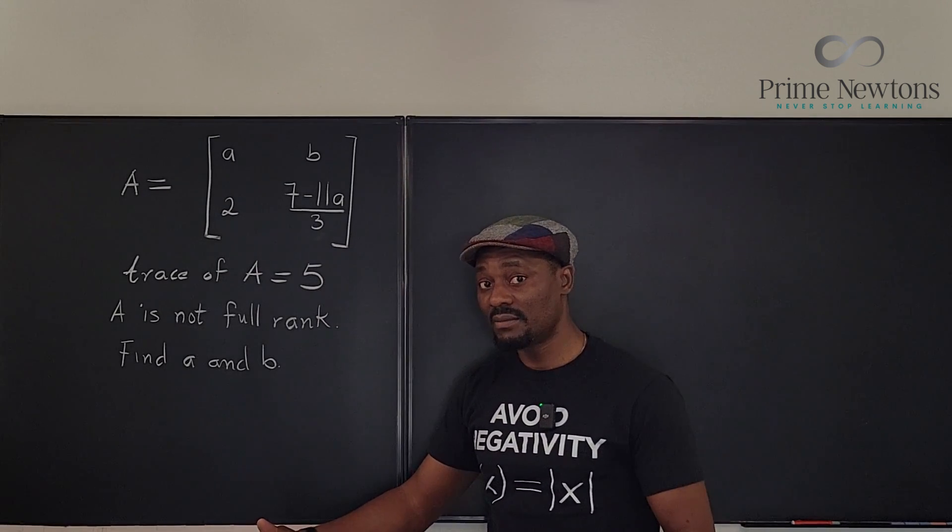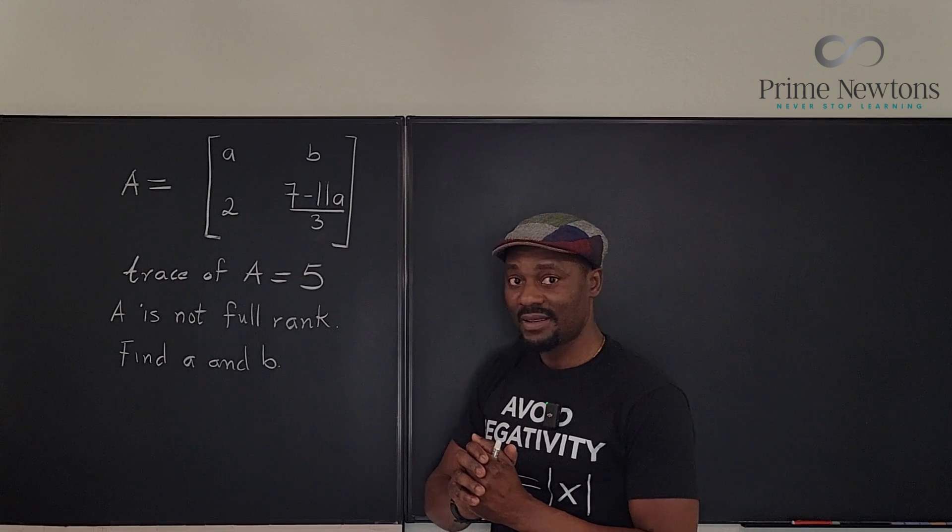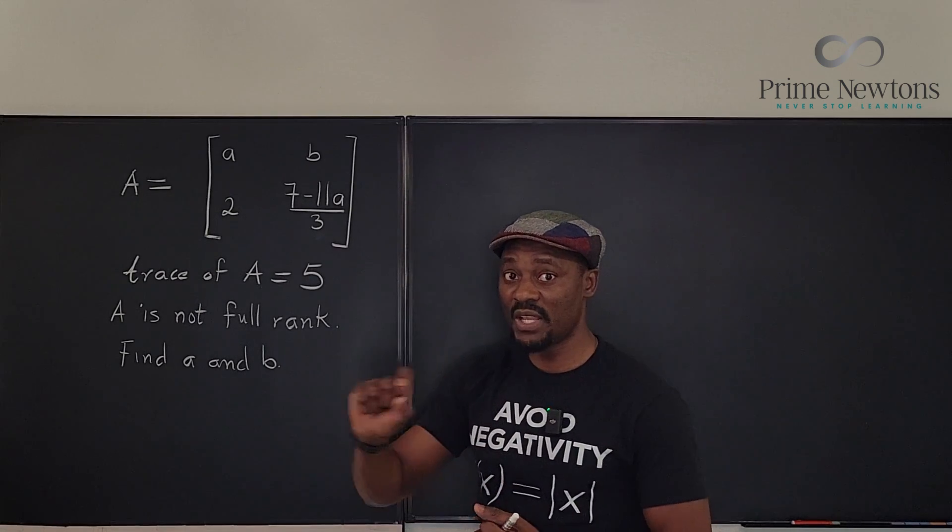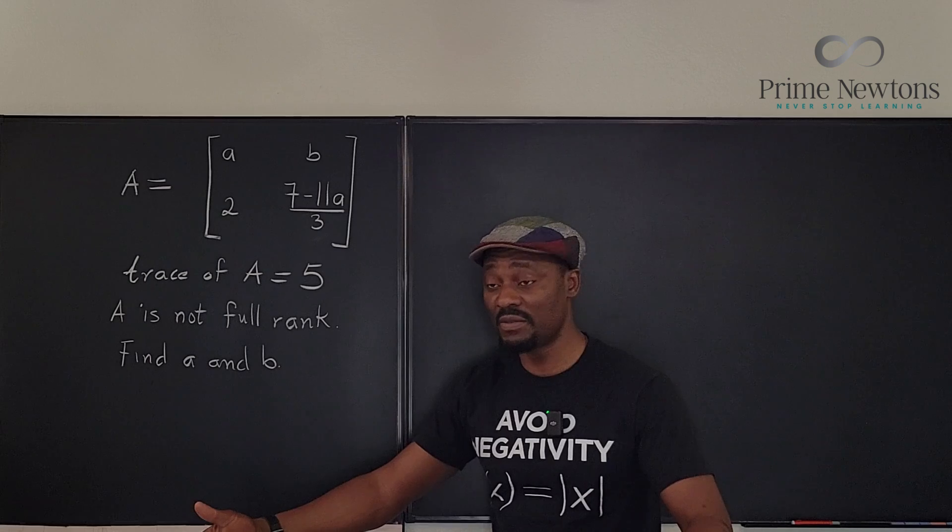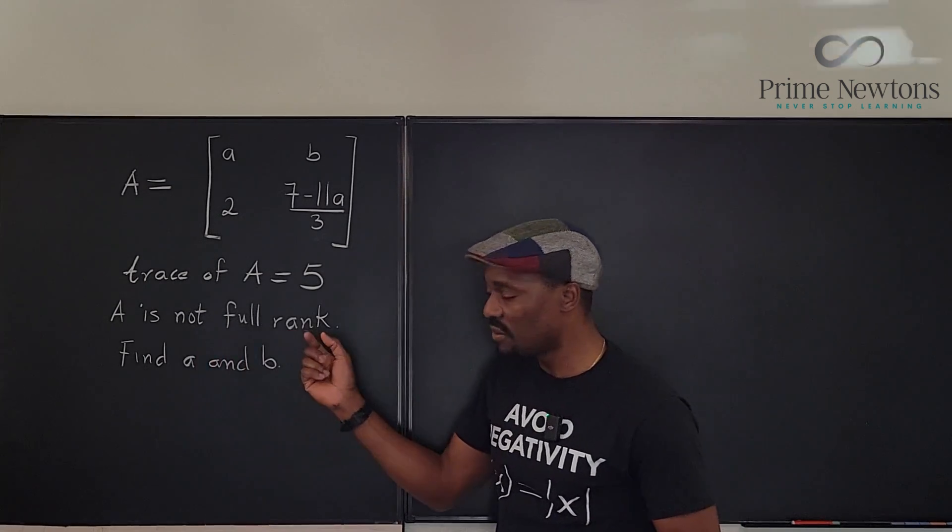So how do we find b? I think we cannot find two things using one equation. Definitely we need more information. And a is not full rank. What does it mean?